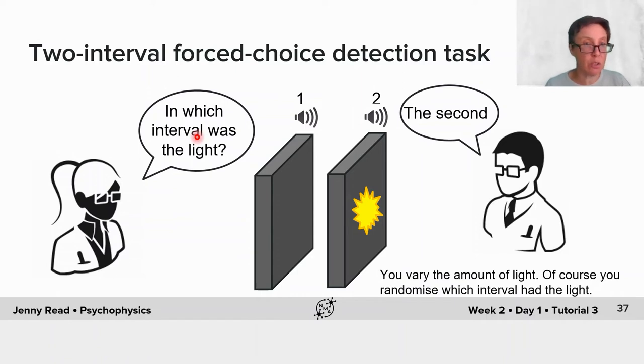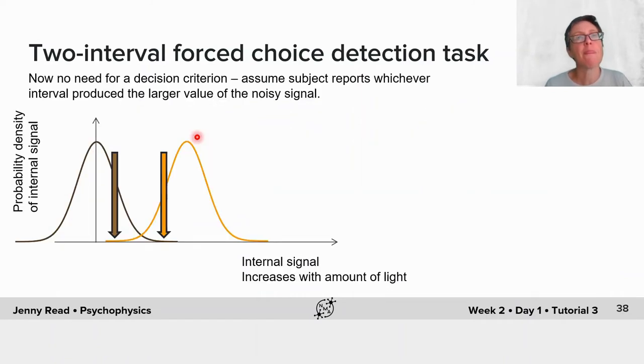You ask the subject, which interval do you think had the light? There isn't any need for a decision criterion because the subject has got access to two internal signals, one from the first interval, one from the second. We can assume that a rational strategy is to report whichever interval produced the larger value of the noisy signal.